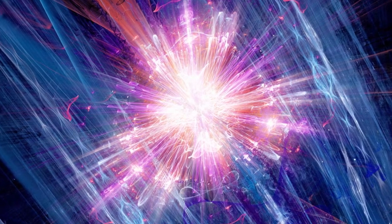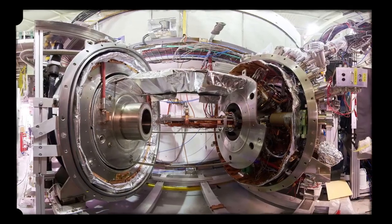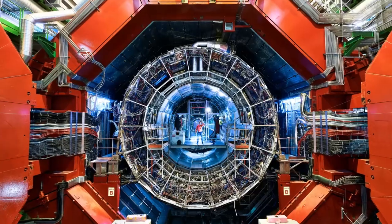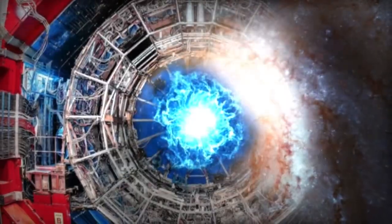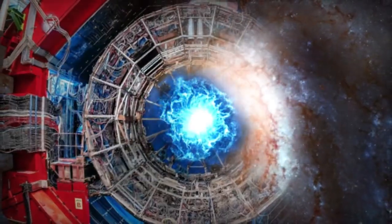The collisions produce antiparticles, which are then captured and stored using sophisticated magnetic traps. This process is extremely inefficient, yielding only minute quantities of antimatter at an astronomical cost. To put it into perspective, the production cost of one gram of antimatter is estimated at around $62.5 trillion.